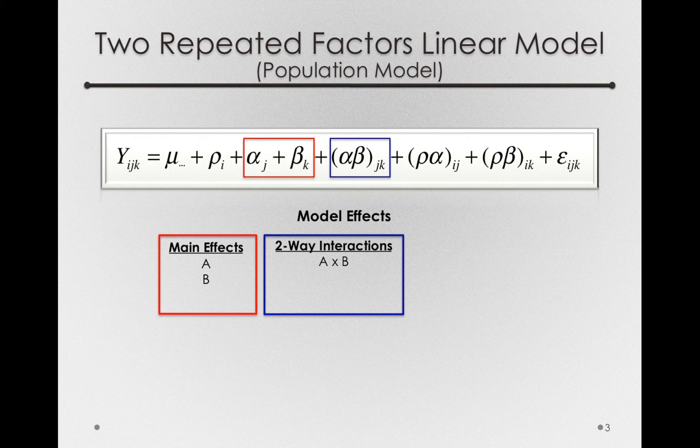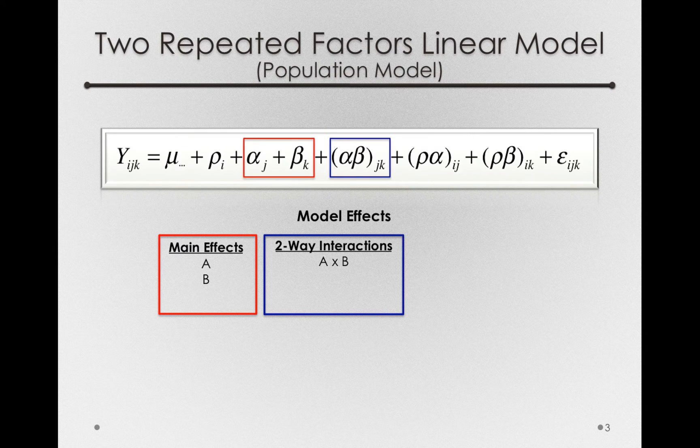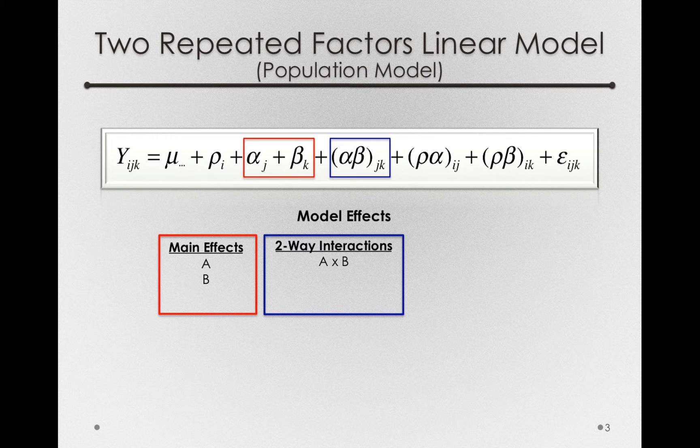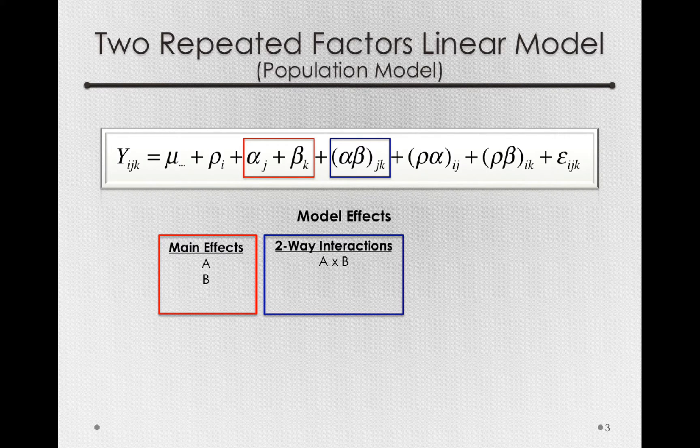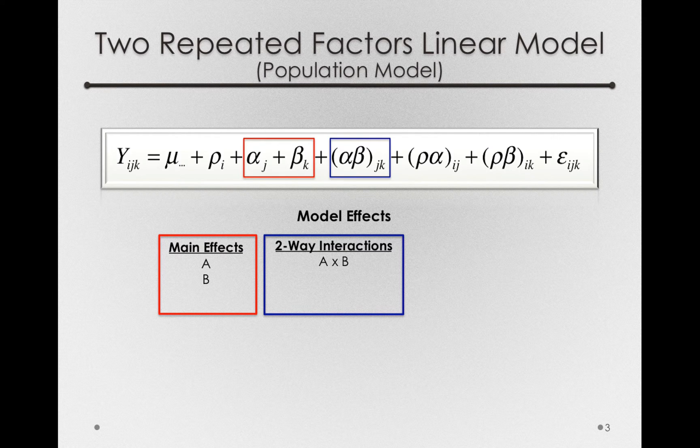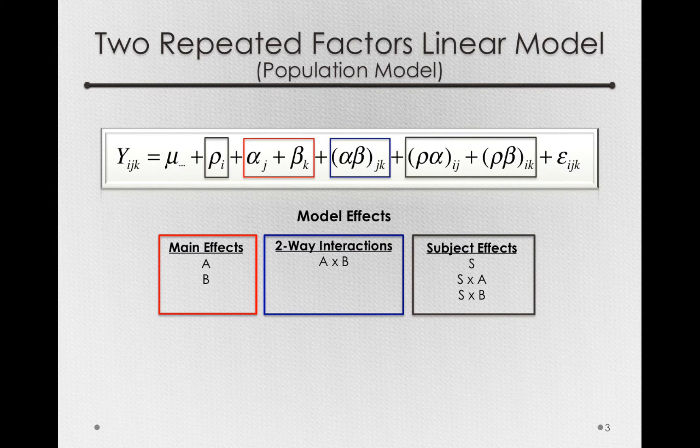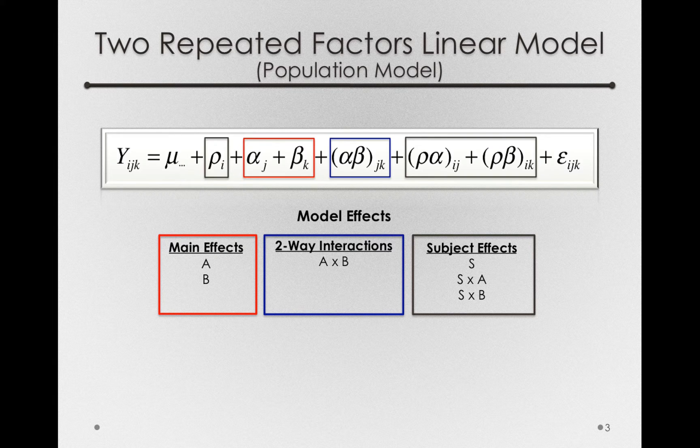We have the two-way interaction, in this case we only have one two-way interaction, that is a part of our fixed structure that is relating to our actual manipulation or the conditions of our experiment. And then we have subject effects, so effects that are due to differences across subjects and differences across subjects in relation to their response to our factors.